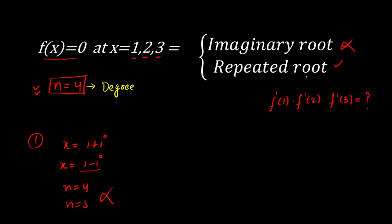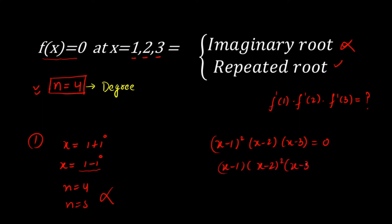The 4th root must therefore be a repeated root. The three possible cases are: (x−1)²(x−2)(x−3) = 0, or (x−1)(x−2)²(x−3) = 0, or (x−1)(x−2)(x−3)² = 0, depending on which of the three roots is repeated.